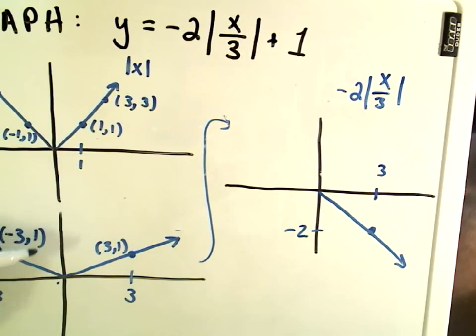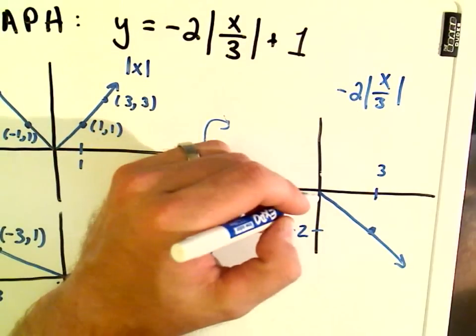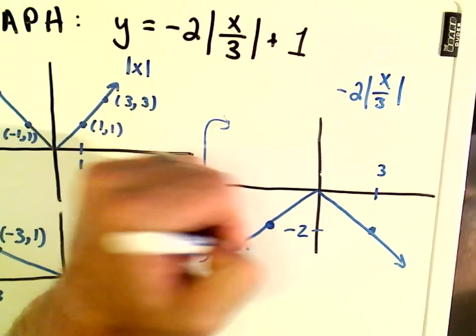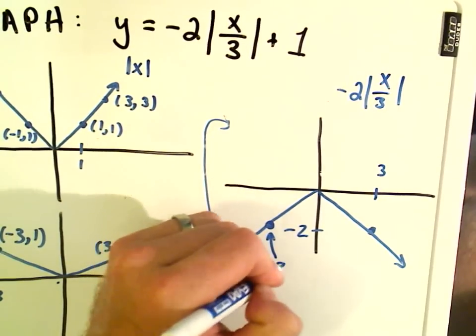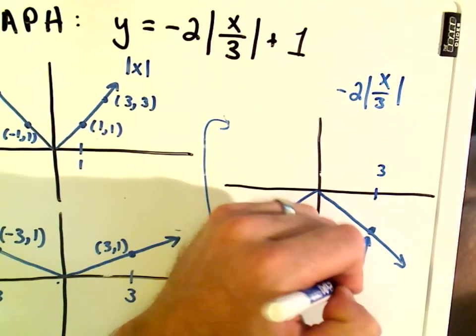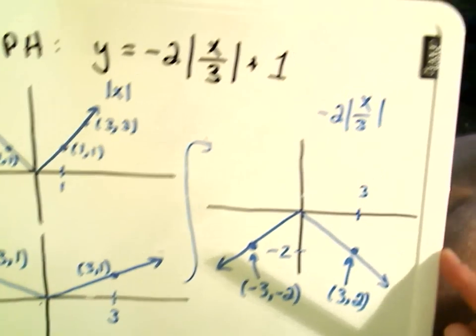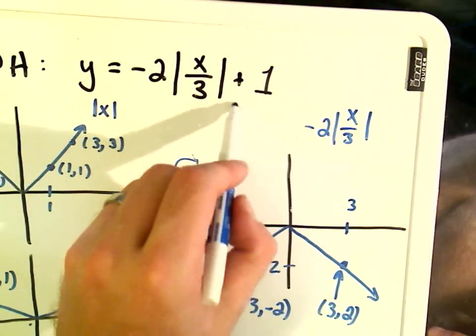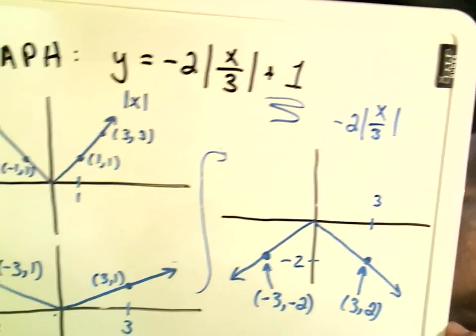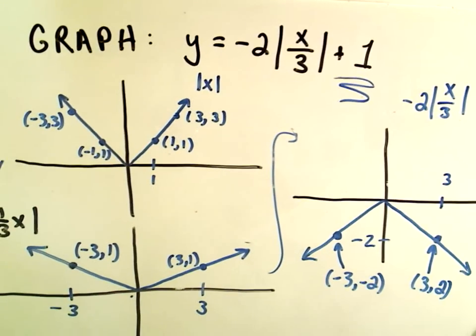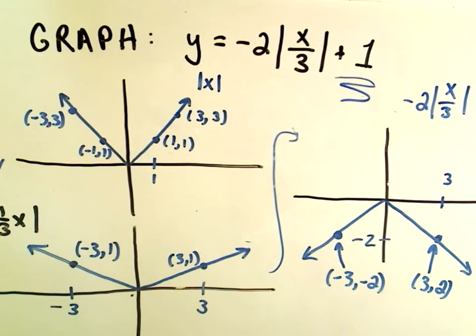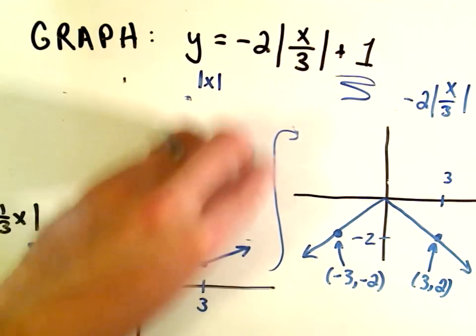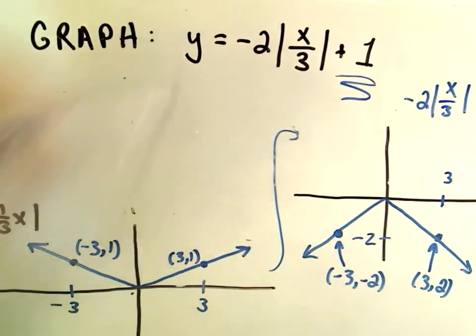Our 3 comma 1 point is going to get moved down to 3 comma negative 2. And since the graph is symmetric about the y axis, you can think about it the same way. Our negative 3 comma 1 point, if you multiply the y coordinate by negative 2, it's now going to flip it so that the graph is downstairs as well. There's negative 3 comma negative 2. Well, we're almost there. The only thing we have left to do is tag on our plus 1.